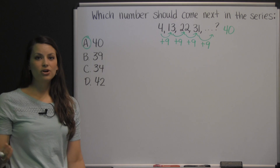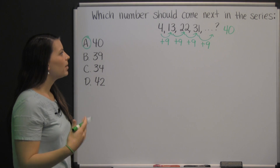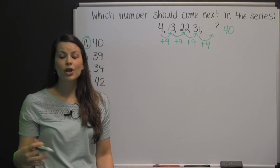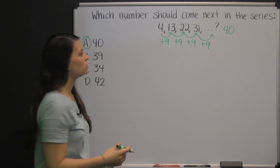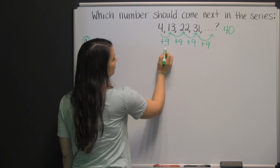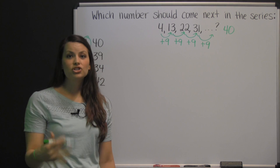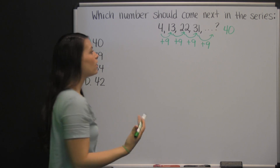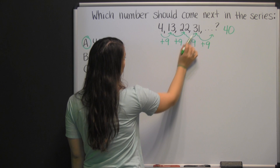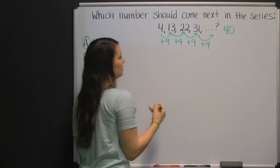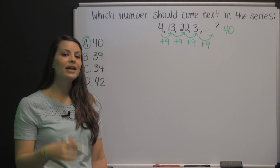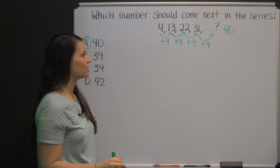You could use a calculator on this question by taking thirteen and subtracting four from it. If you weren't sure what the difference was between thirteen and four, you could simply type in thirteen minus four and it would give you nine. Then you could check to see if that difference was consistent throughout the pattern. Twenty-two minus thirteen is again nine, and thirty-one minus twenty-two is again nine. And then you would confirm the pattern is that you're adding nine to the previous term to get the next term.